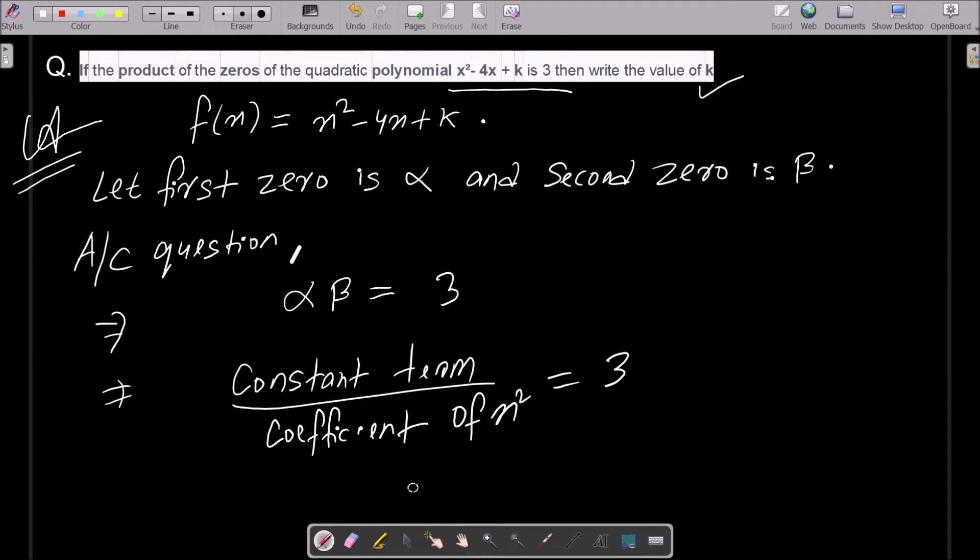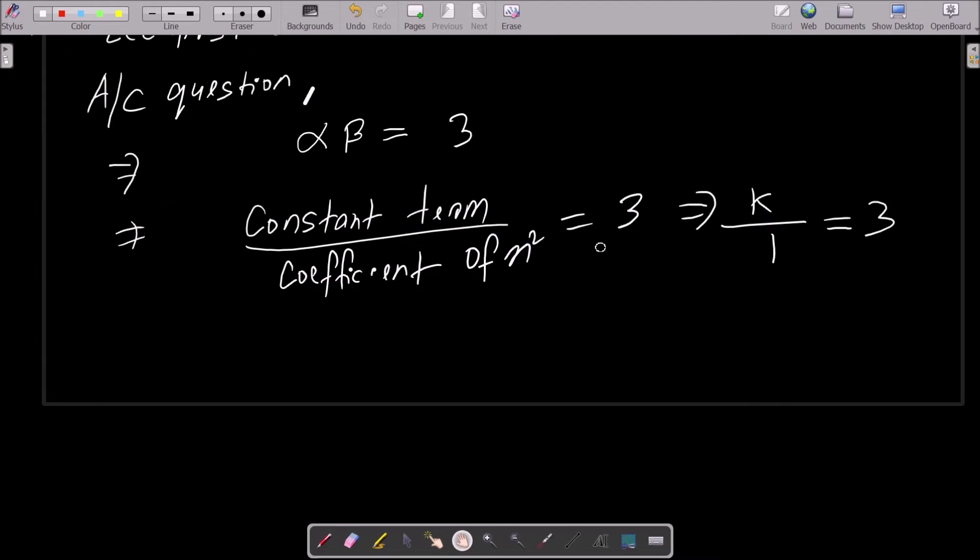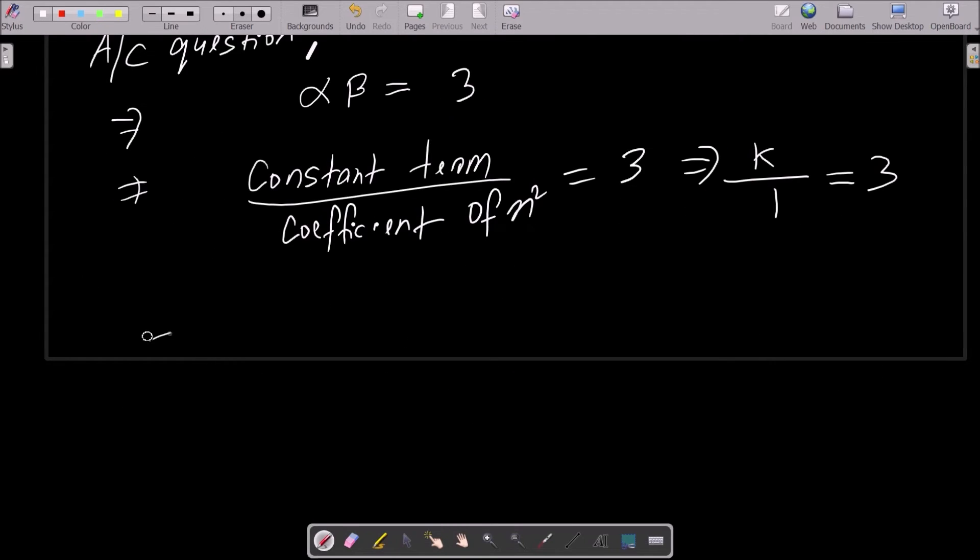So we can write: constant term is k, and coefficient of x² is 1. This equals 3. Therefore k/1 = 3. If you do the cross multiplication, k = 3.